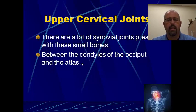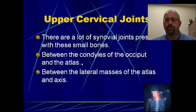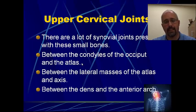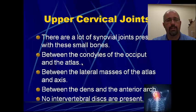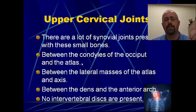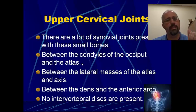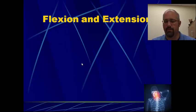You've got the joints between the condyles and the occiput, between the lateral masses of the atlas and the axis, and the dens and the anterior arch — a bunch of synovial joints with no intervertebral discs. You will never have a C1 disc problem because it doesn't exist. There's no disc between C1 and C2, no disc between C0 and C1. Your first disc is C2-C3. Always remember that.